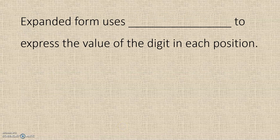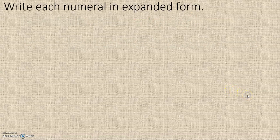Expanded form uses exponents to express the value of the digit in each position. We're going to write the numerals in expanded form, starting with 924. 9 is in the hundreds place, 2 is in the tens place, and 4 is in the ones place.